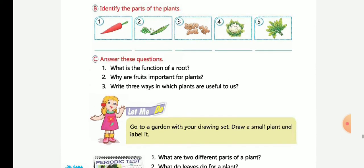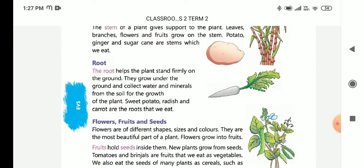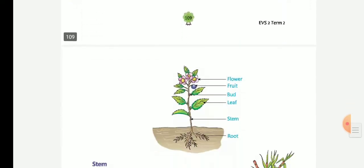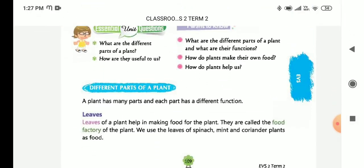What are two different parts of a plant? Two different parts of plant - leaves, stem, root. Very good.